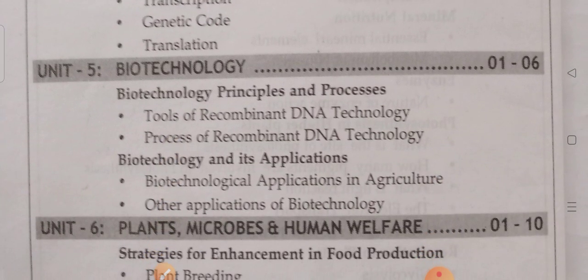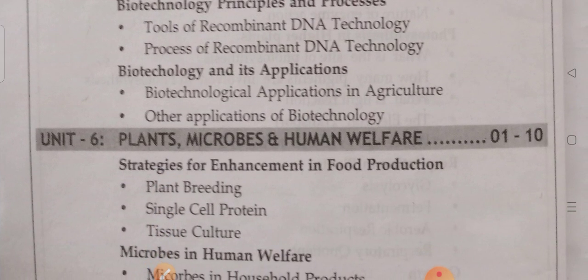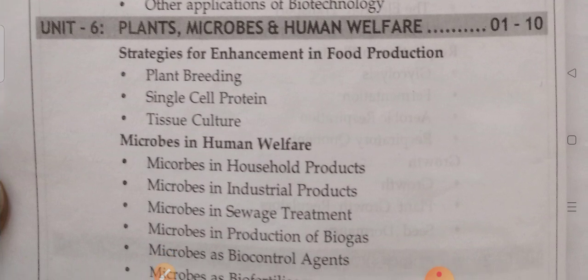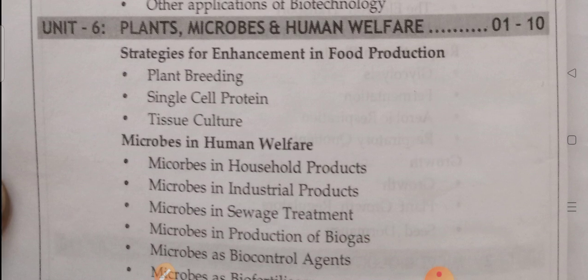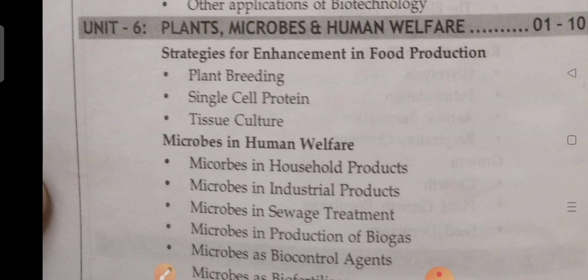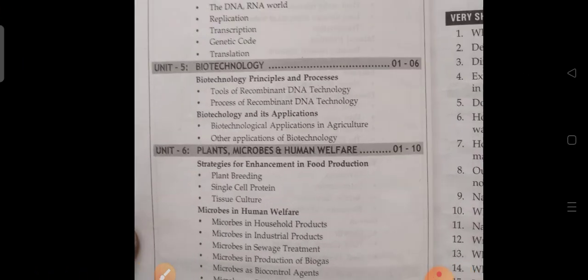The fifth unit is Biotechnology: Biotechnology — Principles and Processes, Tools of Recombinant DNA Technology, Processes of Recombinant DNA Technology, and Biotechnology and its Applications — including Biotechnological Applications in Agriculture and other applications. The sixth unit is Plants, Microbes and Human Welfare: Strategies for Enhancement in Food Production, Plant Breeding, Single Cell Protein, Tissue Culture, Microbes in Human Welfare, Microbes in Household Products, Microbes in Industrial Products, Microbes in Sewage Treatment, and Microbes in Production of Biogas.